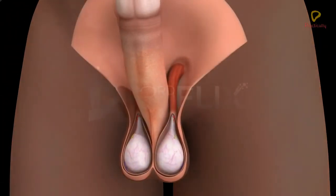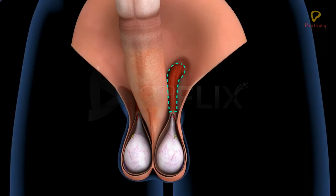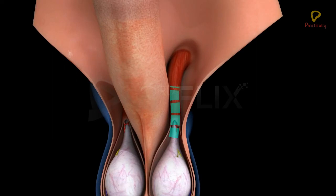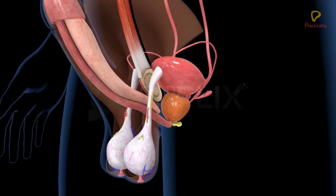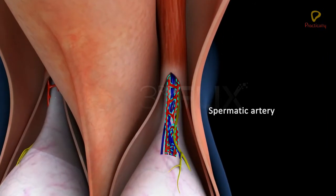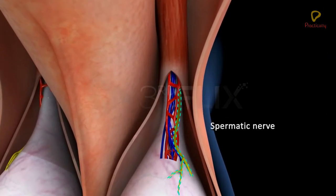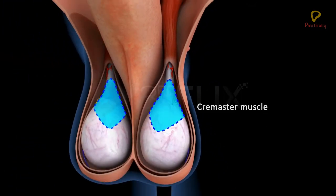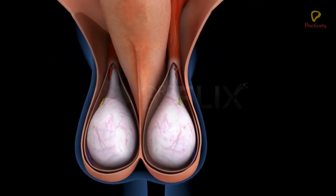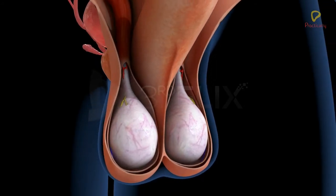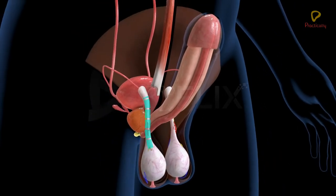The cavity of the scrotum is connected with the abdominal cavity through the inguinal canal. The spermatic cord passes through the inguinal canal. The spermatic cord contains the vas deferens, spermatic artery, spermatic vein, spermatic nerve, and cremaster muscle. These are all held together by connective tissue. The spermatic cord connects the testes to the abdominal wall.